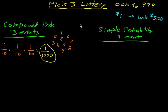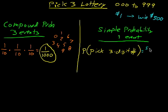But let's do simple probability, where there's just one event. So the event is picking a three digit number. In other words, what is the probability that you'll pick a three digit number that perfectly matches the daily number? Well, the definition of probability is successful events over total events, or total outcomes. Successful outcomes over total outcomes. And how many three digit numbers are there?